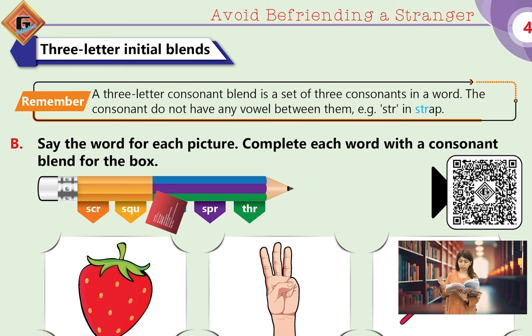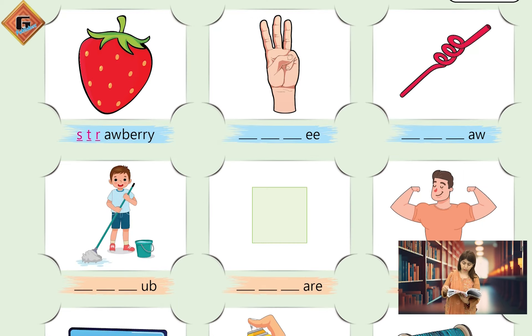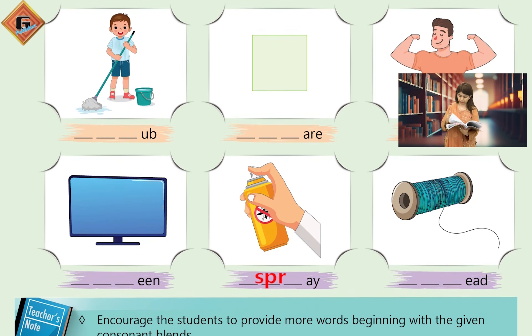For example: S-C-R gives us 'scr', S-Q-U gives us 'squ', S-P-R gives us 'spr'. Here are some example words: strawberry, three, straw, scrub, square, strong, screen, spray, thread.